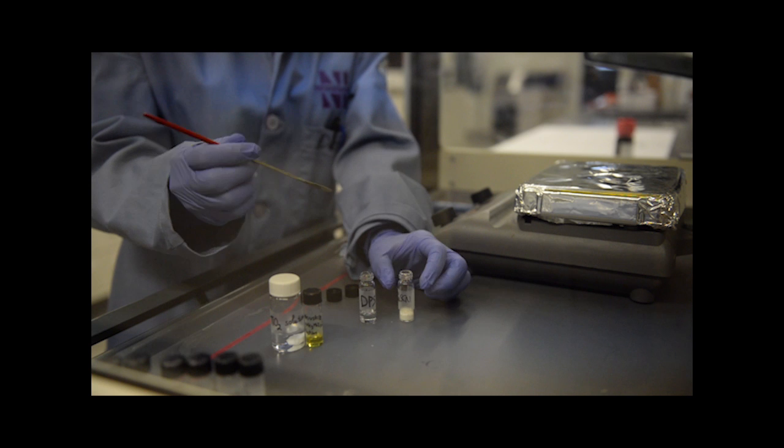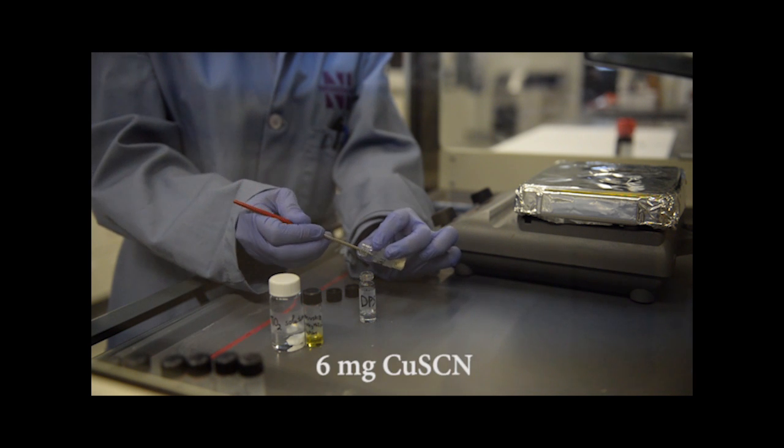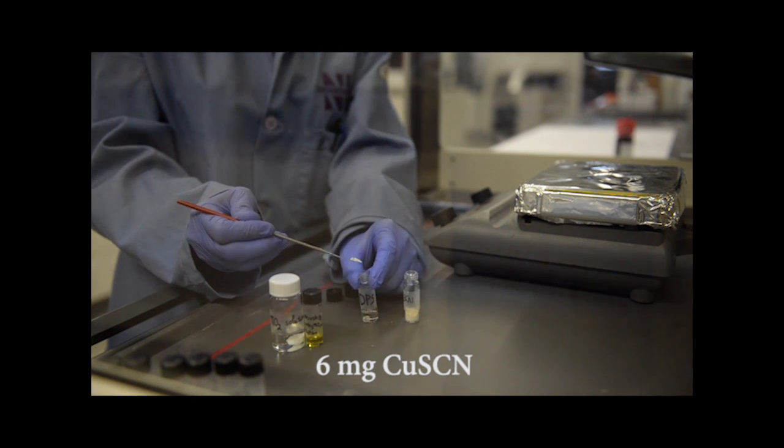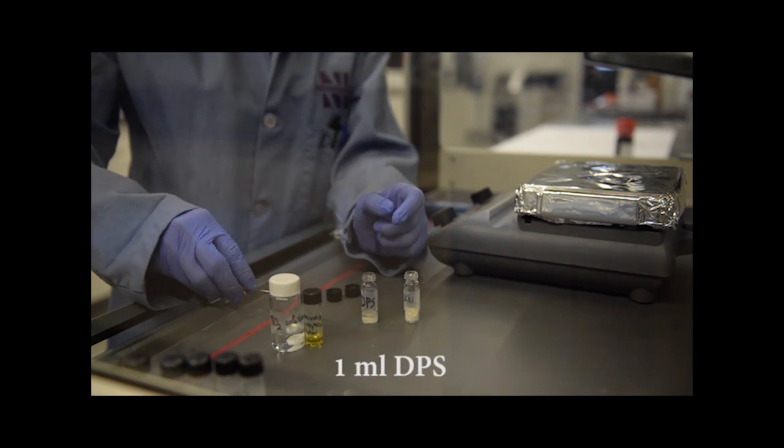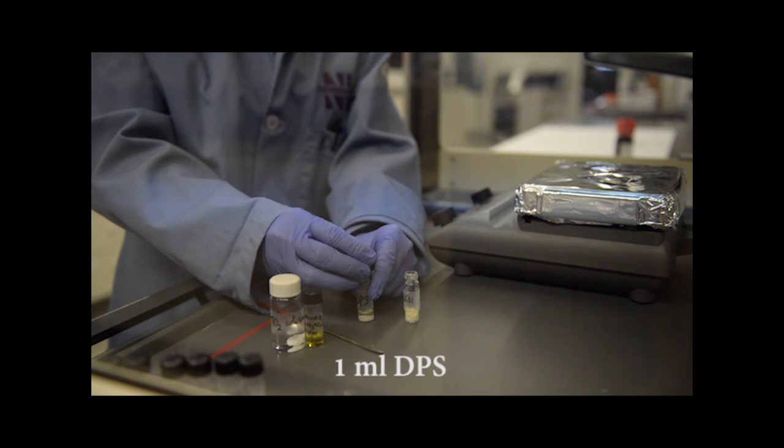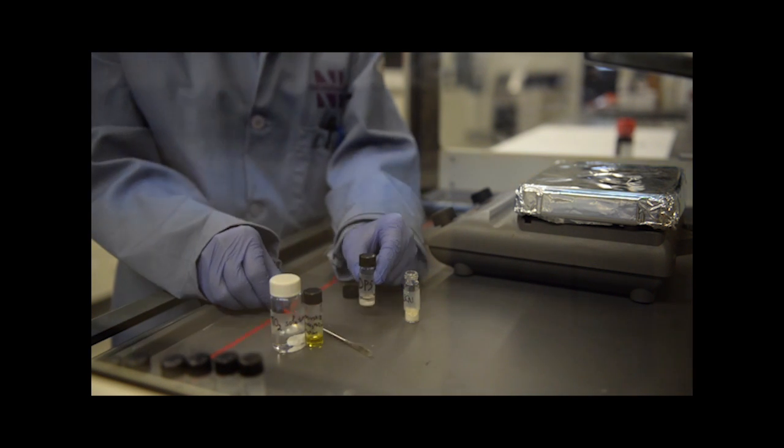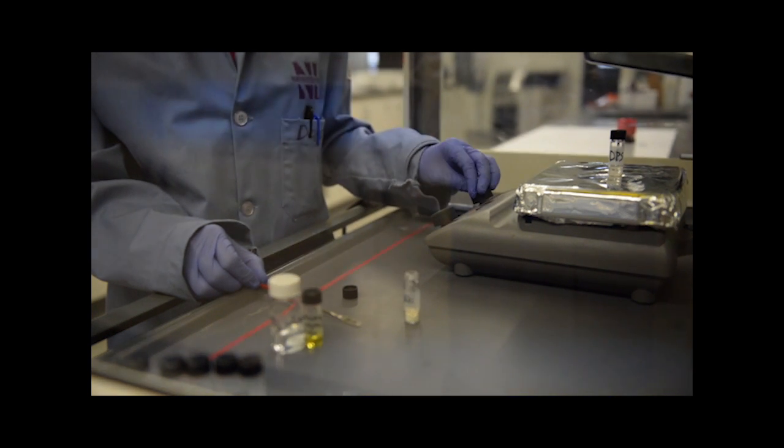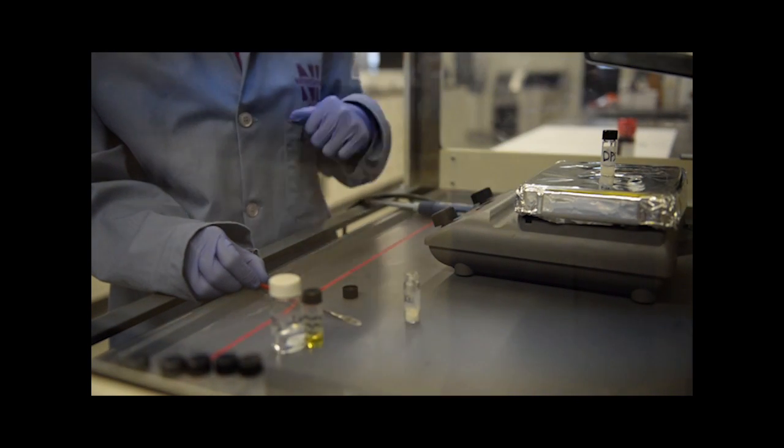Lastly, we will make a 0.05 molar copper thiocyanate solution by stirring 6 milligrams of copper thiocyanate powder in 1 milliliter of dipropyl sulfide solvent at room temperature overnight. The final solution should look colorless and transparent.